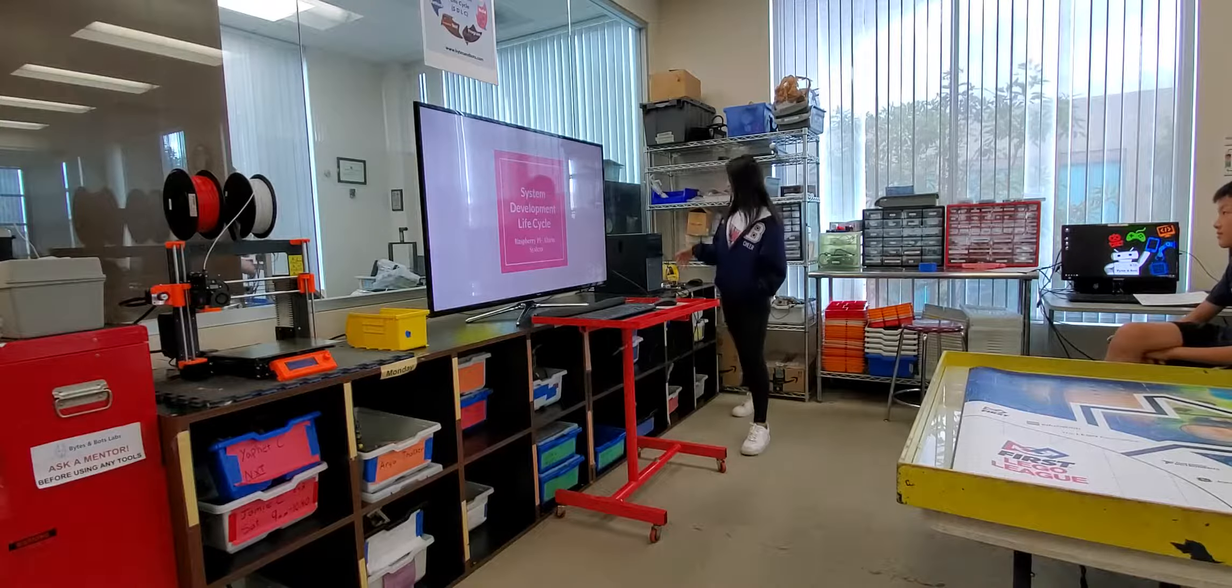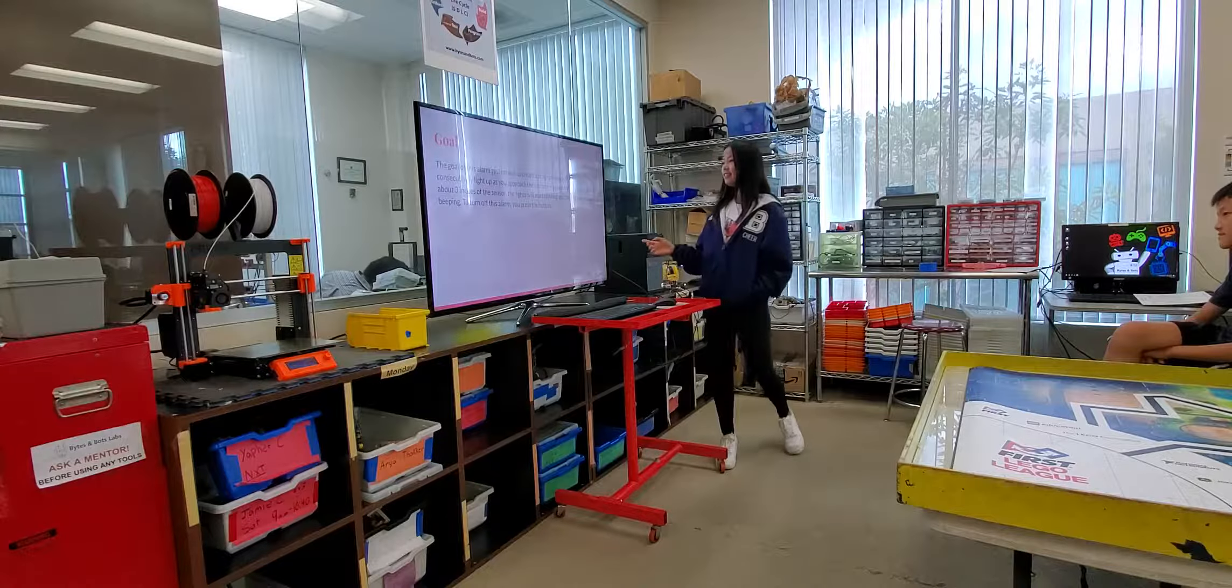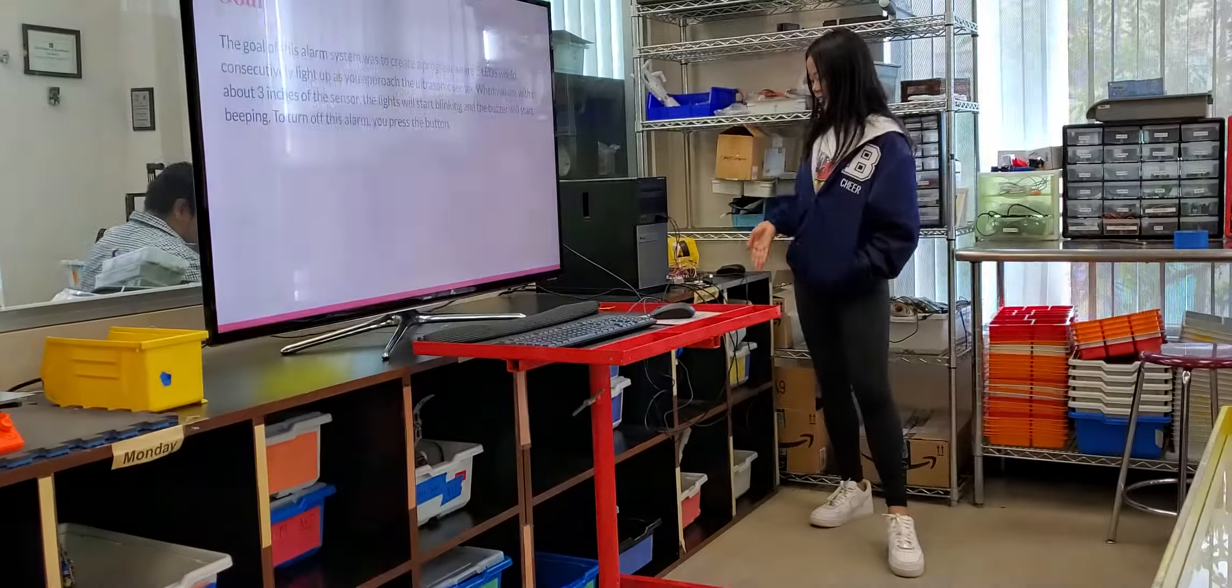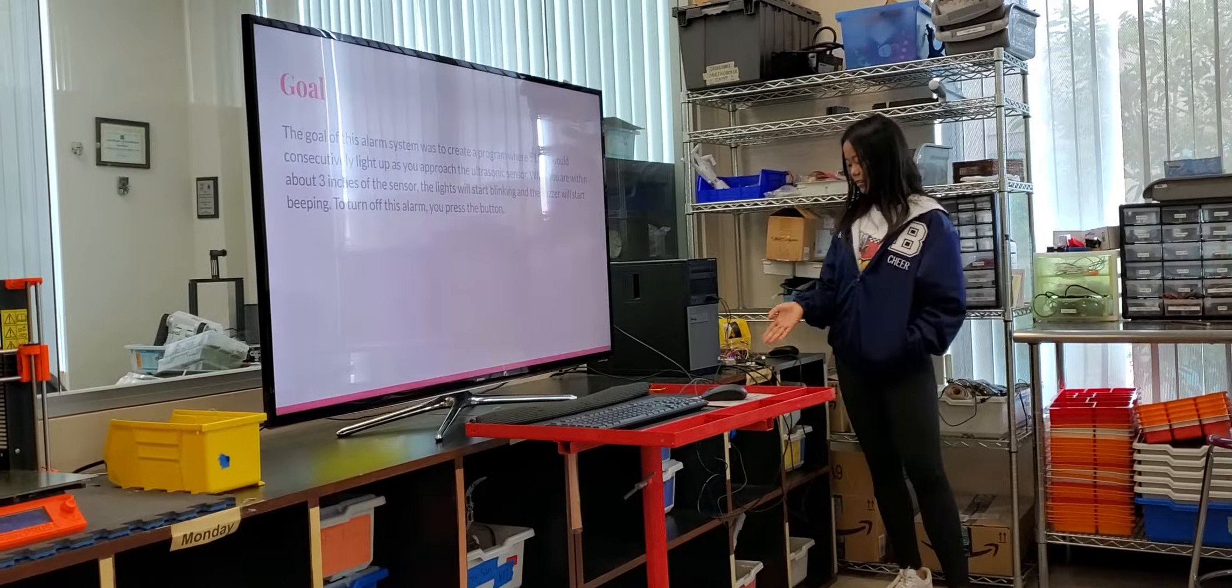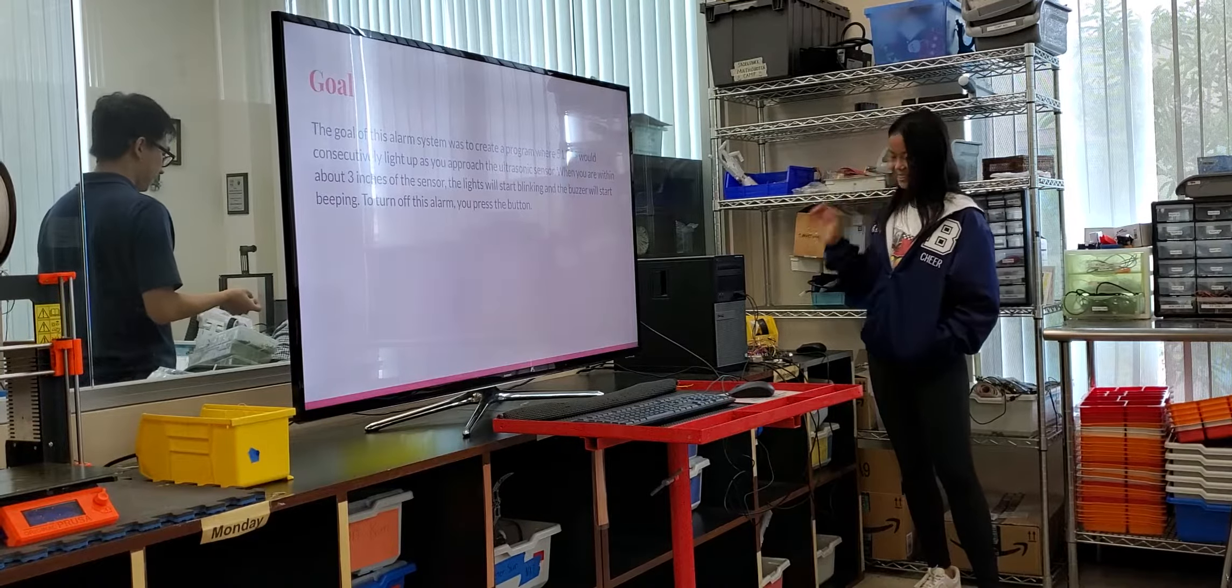Okay, so this is my alarm system. The goal was to make it so there's five LEDs, and as you get closer more lights light up. Then when you get too close, all of them start blinking and it buzzes. Then to stop it from buzzing...